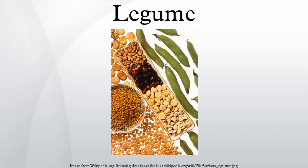Many legumes contain symbiotic bacteria called rhizobia within root nodules of their root systems. These bacteria have the special ability of fixing nitrogen from atmospheric molecular nitrogen into ammonia. Ammonia is then converted to another form, ammonium, usable by plants. This arrangement means that the root nodules are sources of nitrogen for legumes, making them relatively rich in plant proteins.